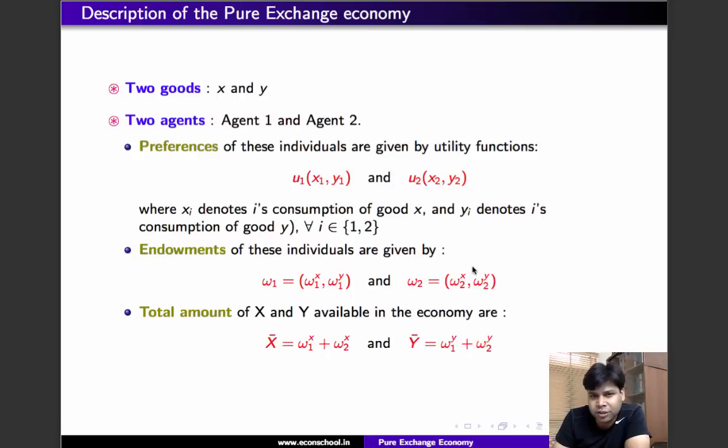Such an exchange will result in an allocation. Now what is an allocation? An allocation is a specification of how much amount of commodity x and y are consumed by individual 1 and 2. We would call an allocation a feasible allocation if the sum of the amount of x consumed by the individuals in the given allocation equals the total endowment of x in the economy, and same must also hold for y.